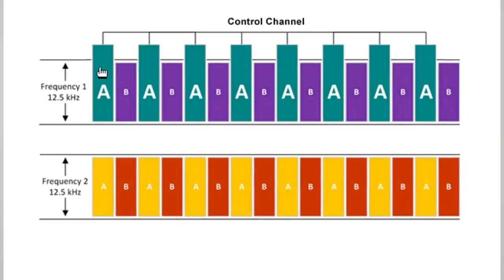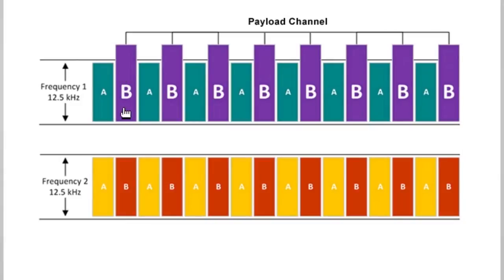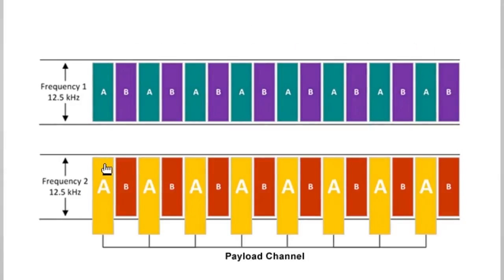In a DMR trunked network, each site has one control channel and several traffic channels. These are logical time slot channels. To make a call between sites, several traffic channels can be used on different sites. For multi-site group calls or inter-site individual calls, a traffic channel is used at each site involved in the call.